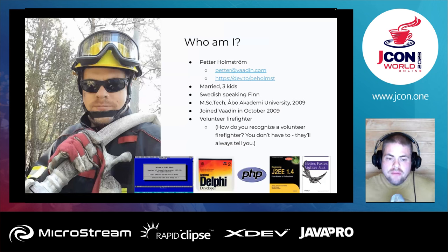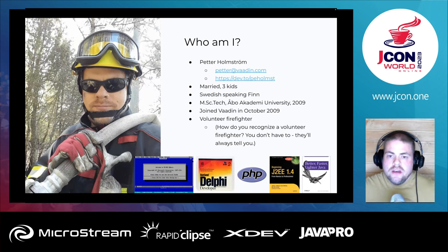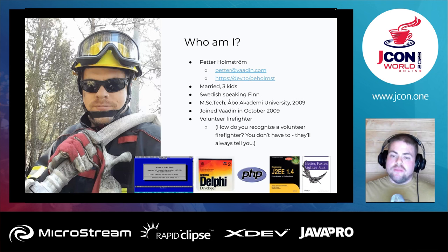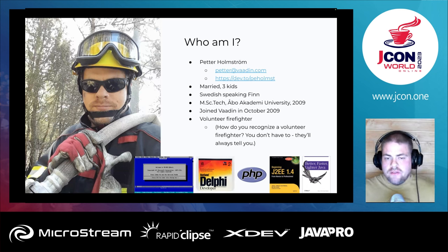So who am I? I'm a principal software engineer at Vaadin in Finland. I'm actually talking to you from my sauna, as one does. I'm 39 years old. I began programming with QBasic on an old 386 running MS-DOS 6.22 and Windows 3.11 when I was around 10 or 11. And a few years later, in my early teens, I built my first database applications with Borland Delphi and the Paradox database engine.